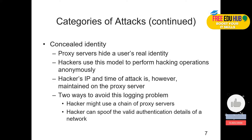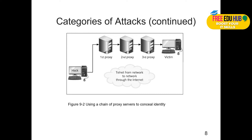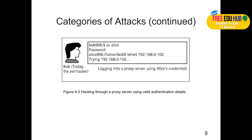Two ways to avoid the logging problem: a hacker might use a chain of proxy servers, or spoof valid authentication details of a network. A hacker has a first proxy, second proxy, third proxy, and then attacks the victim — constantly hiding his identity through telnet from network to network. For example, if he uses someone else's username and password to log in to a proxy server using Elise's credentials, the person responsible for any problems would be Elise, since her account was used to launch any attacks.